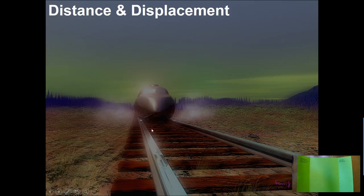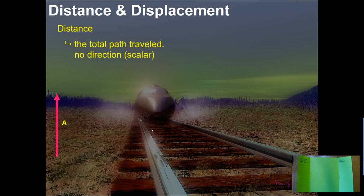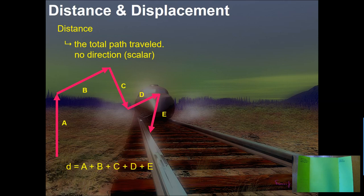1D kinematics — it is position, velocity, and acceleration. Looking at this first slide: distance and displacement. Distance is the total path that you travel. There is no direction, and it's a scalar value. So if I go up with A, across with B, down with C, across with D, and down with D, if I add all of those together, that's really going to give me my total distance, which we'll sometimes use the symbol D for distance.